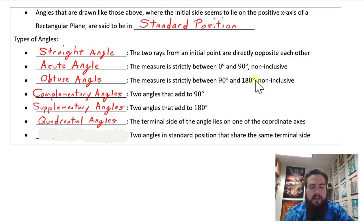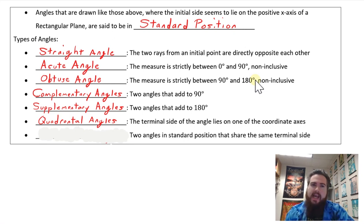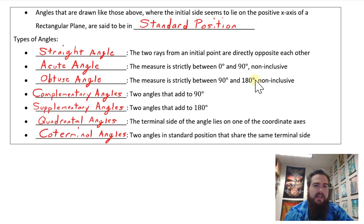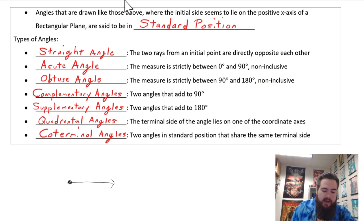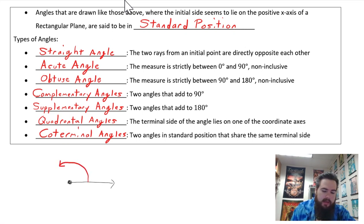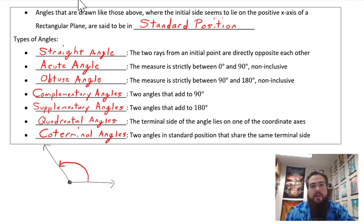Lastly, and likely more importantly, we have coterminal angle measures. These occur when two angles in standard position share the exact same terminal side. Because we have not seen an example yet, here is a quick demonstration: starting with a ray in standard position facing right, if I rotate it one third of a full rotation, that results in an angle measure of about 120 degrees.